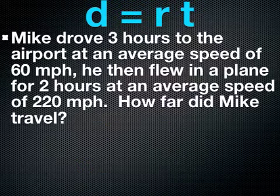The next example says Mike drove 3 hours to the airport at an average speed of 60 miles per hour. Then he flew in a plane for 2 hours at an average speed of 220 miles per hour. How far did Mike travel? First, he traveled in a car. Then he traveled in an airplane. So to find how far he traveled all together, I need to find the distance that he drove and then the distance that he flew. And I would need to add those two distances together to find his total distance. I can do this using the distance formula.